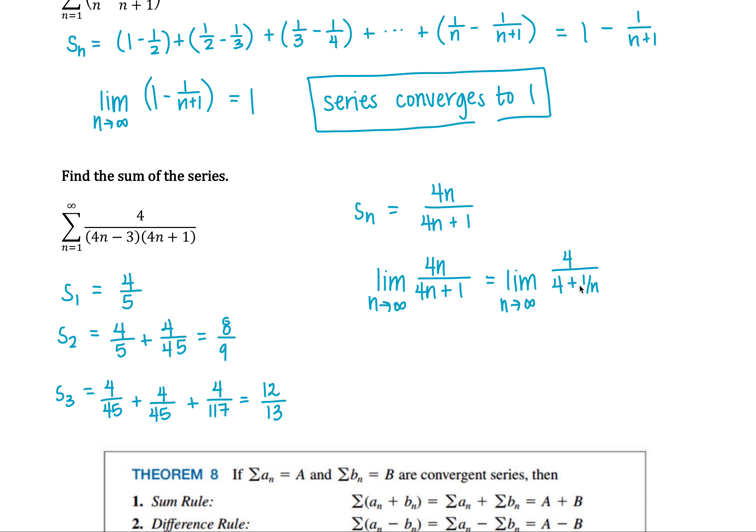As n goes to infinity, 1 over n goes to 0. So my limit is just 4 over 4, or 1.